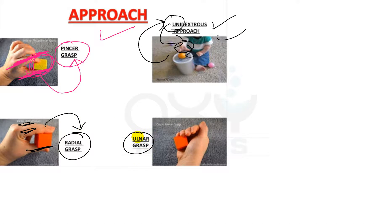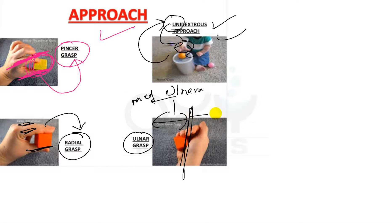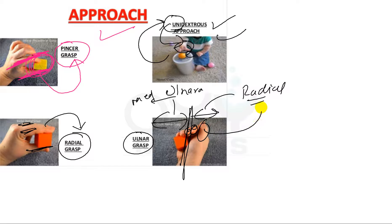And what is ulnar grasp? It is again very simple. This side of the hand is the ulnar side, that is the medial side, and this side is the radial side. So radial grasp is when the baby holds any object with the index finger, middle finger, and thumb. And if a baby is holding something with the ring finger, little finger, and the palm of the ulnar side or hypothenar eminence, then it is ulnar grasp.